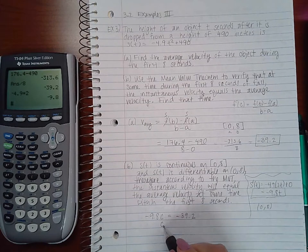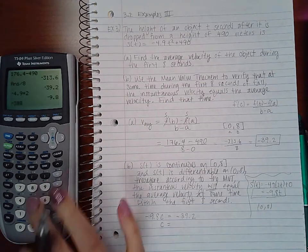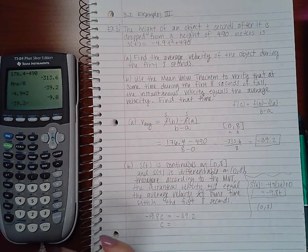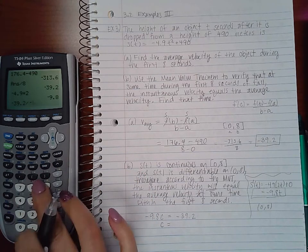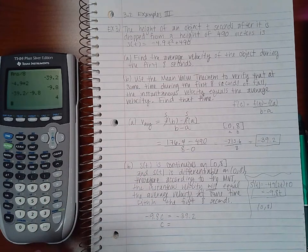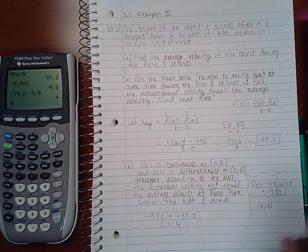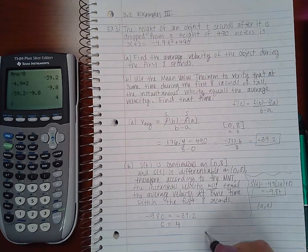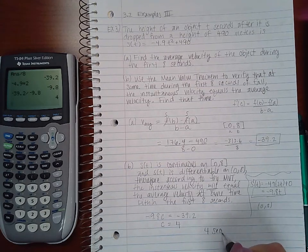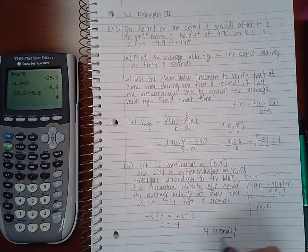Then I already took this value and I got -39.2. So if I want to solve for c, I just need to take -39.2 and divide it by -9.8, and I get c = 4. So that time that they're talking about is 4 seconds.